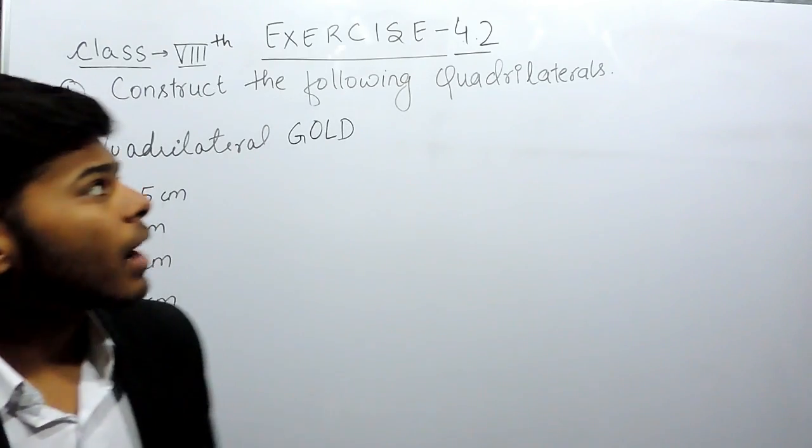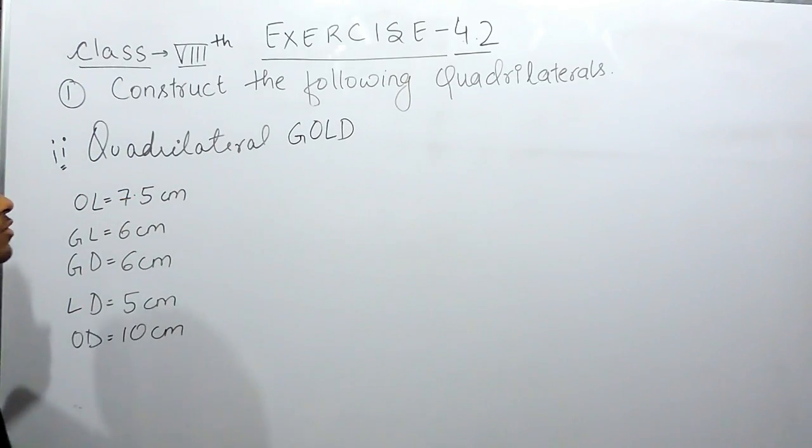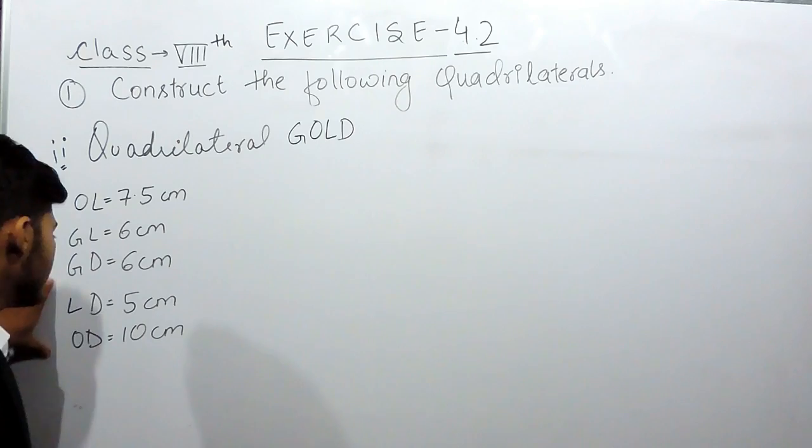Hello everyone, this is the second part of question number 1 of exercise 4.2. In this question, we have to construct a quadrilateral by the name GOLD, and we are given these dimensions.